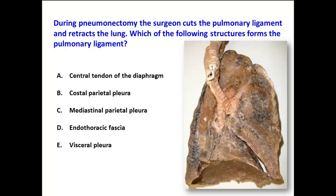This is the root of the lung, and we can see that at the root of the lung there is a bronchus here. By the way, this is the left lung. You can see the lingula and the oblique fissure, and here is the impression for the arch of the aorta.